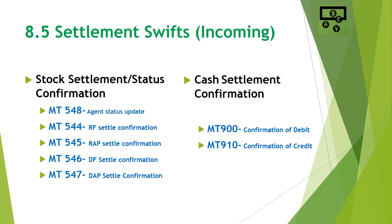In settlements there are also incoming SWIFTs which provide trade status updates. MT548 is an agent status update SWIFT where the agent sends back a status indicating if a trade is matched or unmatched, and can include information on why a trade is unmatched such as an economic parameter mismatch or counterparty mismatch. MT544 is receive free settle confirmation — when an MT540 settles, the agent sends back MT544 confirming the receive free trade has settled. MT545 is receive against payment settlement confirmation — when an MT541 settles, the agent sends back MT545 confirming settlement.